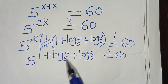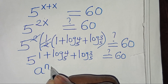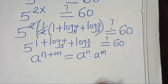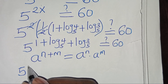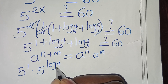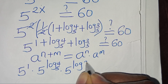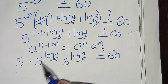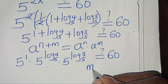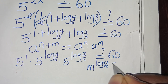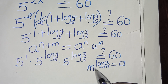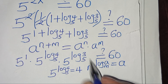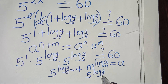Now, 5 to the power of 1 plus log 4 to base 5, plus log 3 to base 5 is in the form of a to the power of n plus m, which we can express as a to power n times a to power m. Applying this exponent property, here we have 5 to the power of 1, times 5 to the power of log 4 to base 5, times 5 to the power of log 3 to base 5. Now, 5 to the power of log 4 to base 5 and 5 to the power of log 3 to base 5 are in the form of m to the power of log a to base m, which gives us a value of a. Applying this property, 5 to the power of log 4 to base 5 gives us 4, and 5 to the power of log 3 to base 5 is equal to 3.